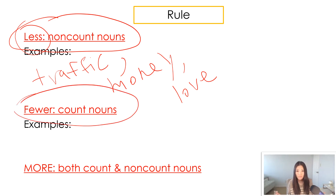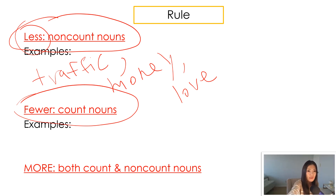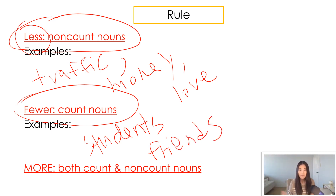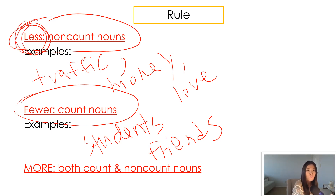We're going to use the word 'fewer' to talk about count nouns only. Count nouns are nouns that take the plural form when we're talking about more than one. For example: 'I have fewer students this semester than last semester,' or 'I have fewer friends in this country than I do in my home country.' A lot of my students would say 'I have less friends,' but we use 'less' only for non-count nouns. Because 'friends' is a count noun, we use 'fewer' instead of 'less.'